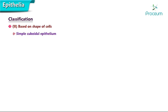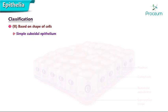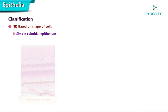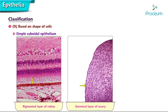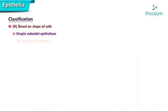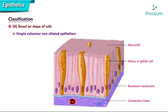Simple cuboidal epithelium: cells have the same height and width with round nuclei at the center. Occurrence includes thyroid follicles, kidney tubules, the pigmented layer of the retina, and the germinal layer of the ovary. A cuboidal epithelium with a prominent brush border is seen in the proximal convoluted tubules of the kidneys. Function is secretion.